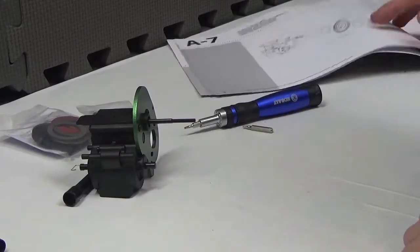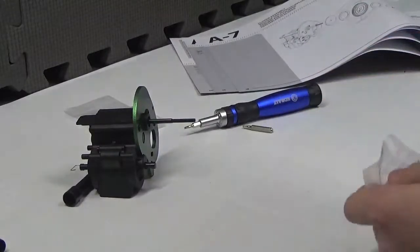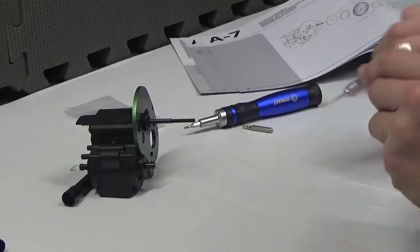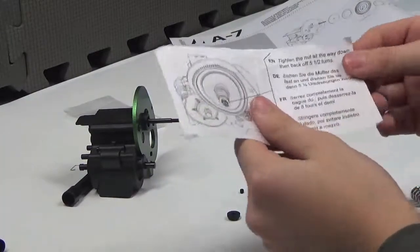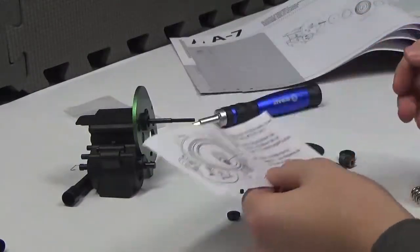All right, for this next step we're going to be building the slipper clutch. All right, so we have a little paper telling us how to do it.